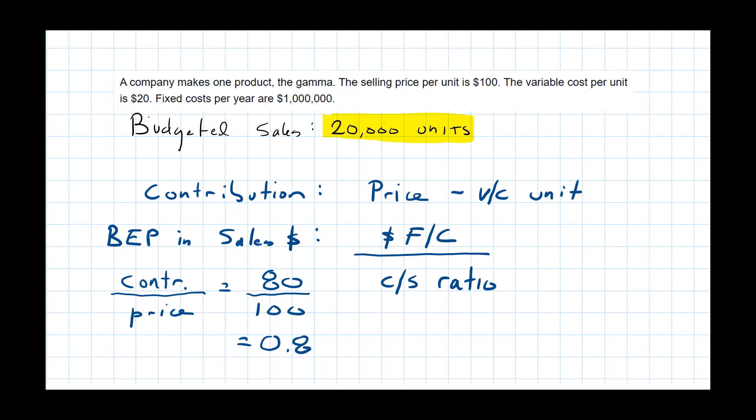So now, we can put those fixed costs back here. And we divide by 0.8. And we get a margin of safety in sales revenue terms of $1,250,000.